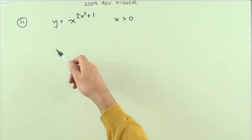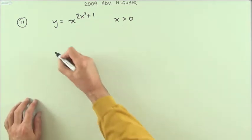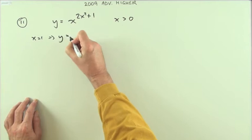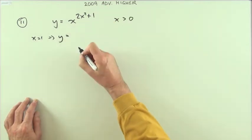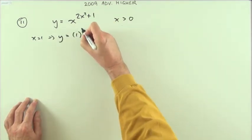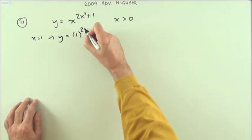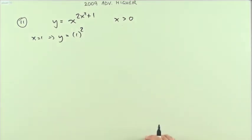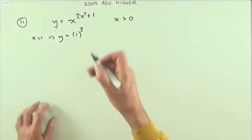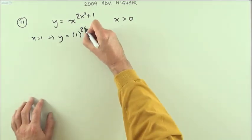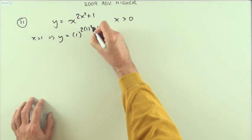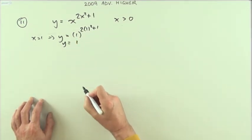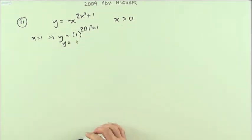Well, the first part's easy because that's ready to go. If x equals 1, then straight away y is just going to replace the x's by 1. So that'll be 1 to the power — and of course it doesn't matter what power you put down, any power of 1 is 1. Times 1 squared plus 1, which gives me 1. So y equals 1.